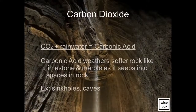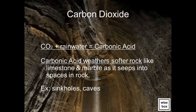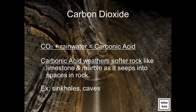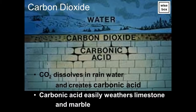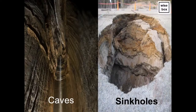Carbon dioxide (CO2) plus rainwater results in carbonic acid. Carbonic acid weathers softer rocks like limestone and marble as it seeps into spaces in rock, forming examples such as sinkholes and caves. Carbonic acid easily weathers limestone and marble, resulting in caves and sinkholes through chemical weathering.